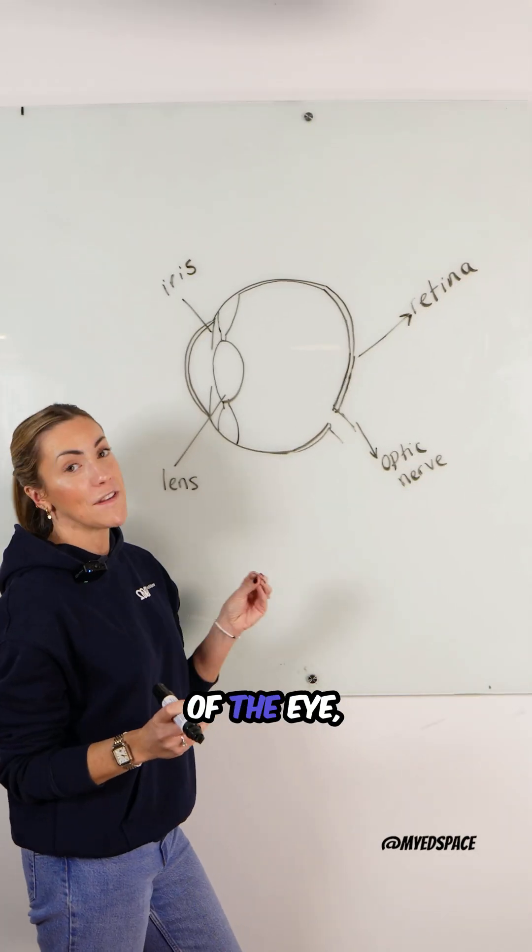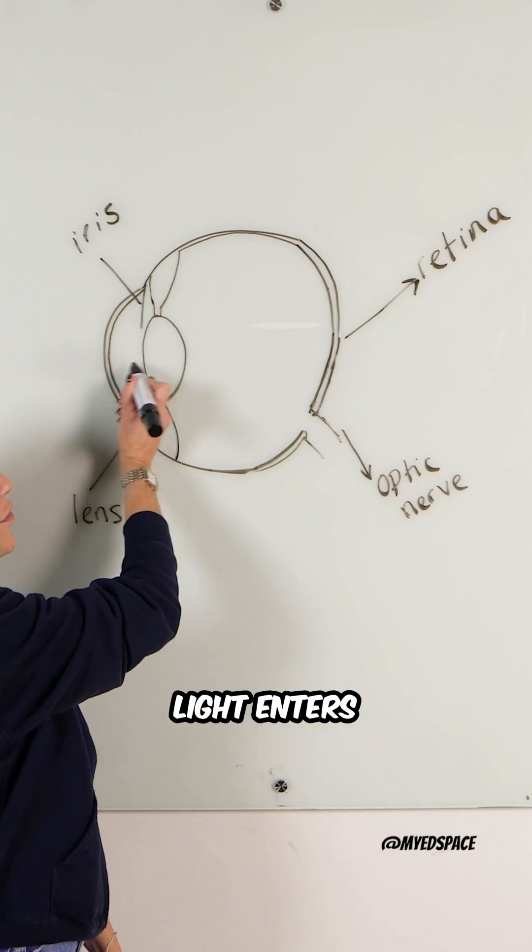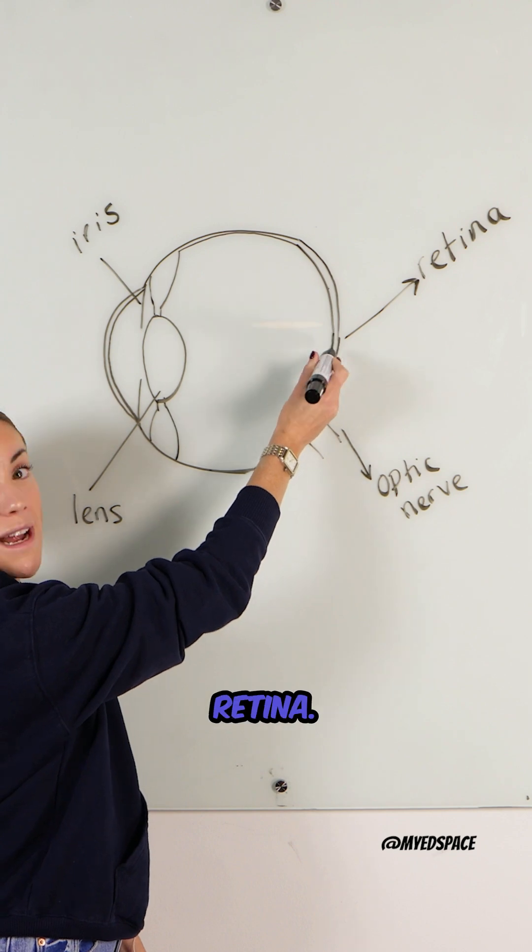So this is your eye. At the front of the eye you have your pupil, which is basically just a hole. The light enters through the pupil and hits the back of the eye where you have your retina.